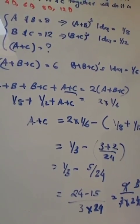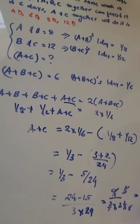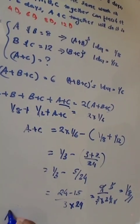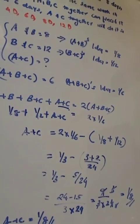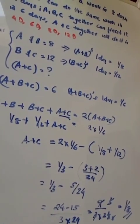3 into 9 is 8, so the answer is 1 by 8. So A and C can do the work in 8 days.